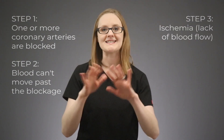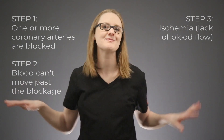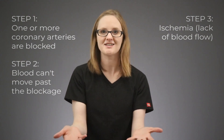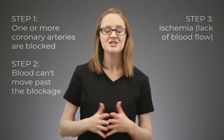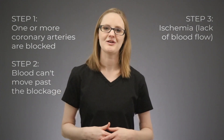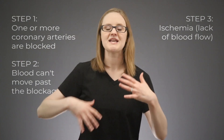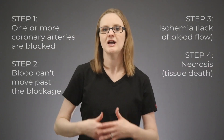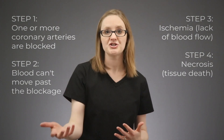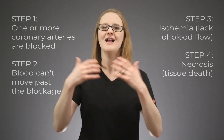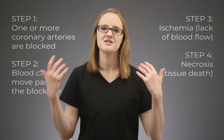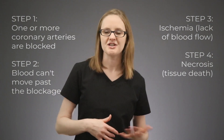Step number three is ischemia. As we said, ischemia just means there is a lack of blood flow to the tissue — in this case, the heart tissue. So in step three, there is ischemia of the heart tissue, meaning the heart isn't getting enough blood flow. If this continues and gets worse, it can lead to step four: necrosis, which means the tissue starts to die. Without blood flow, the heart tissue can't keep going, it can't keep pumping — so if that ischemia goes on too long, it leads to necrosis.